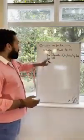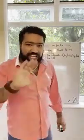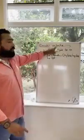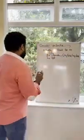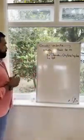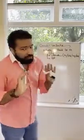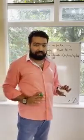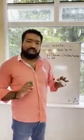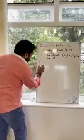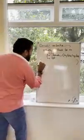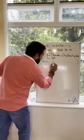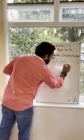In every history-taking station, you need to verbalize that you will examine. Always give consent — is it okay if I examine you? — before proceeding. After you verbalize the examination, the examiner will give you findings; for example, everything is normal, or the oxygen is low.